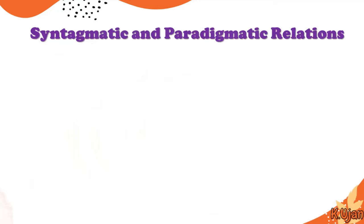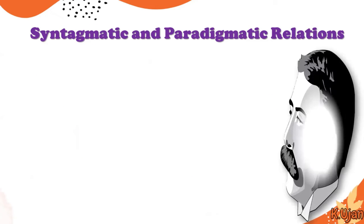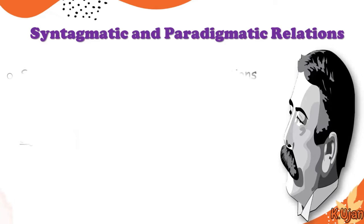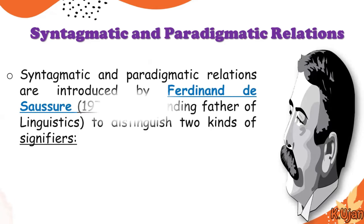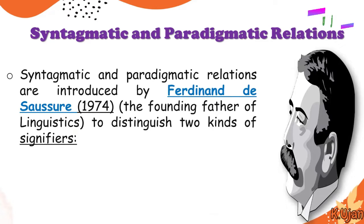Syntagmatic and paradigmatic relations are introduced by Ferdinand de Saussure in 1974, the founding father of linguistics, to distinguish two kinds of signifiers — which are like these things. So those are known as signifiers.